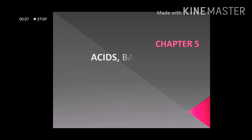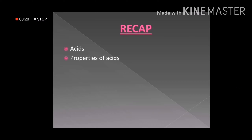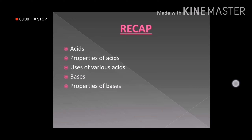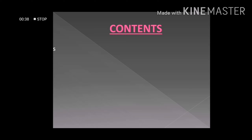Hello students, today we are going to continue with Chapter 5: Acids, Bases and Salts. We studied some topics of this chapter in the previous sessions. The topics we have already studied are acids and their types, properties of acids, uses of various acids, bases and their types, properties of bases, and the uses of some important bases. Today we are going to study about indicators.